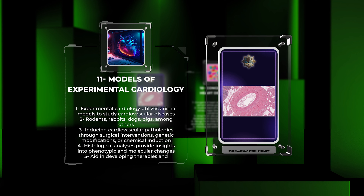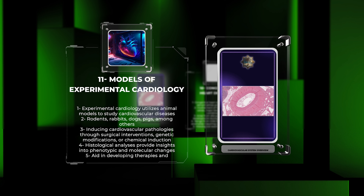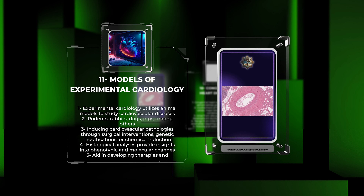Experimental cardiology utilizes various animal models to investigate cardiovascular diseases, develop therapies, and gain a better understanding of disease mechanisms. These models include rodents, rabbits, dogs, and pigs, among others. Scientists induce cardiovascular pathologies through surgical interventions, genetic modifications, or chemical induction. Histological analyses of these models provide valuable insights into the phenotypic and molecular changes associated with cardiovascular diseases.